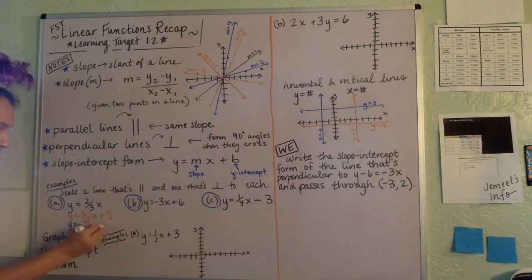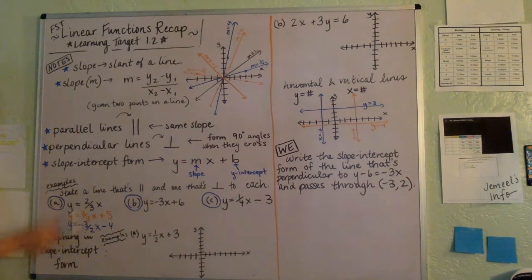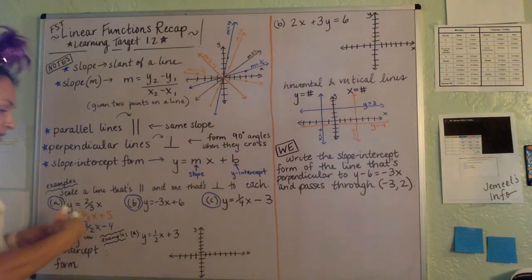And then plus whatever, you can add something or not add something as the Y-intercept. You just need to make sure perpendicular lines have opposite reciprocal slopes. So here we go, same thing here.